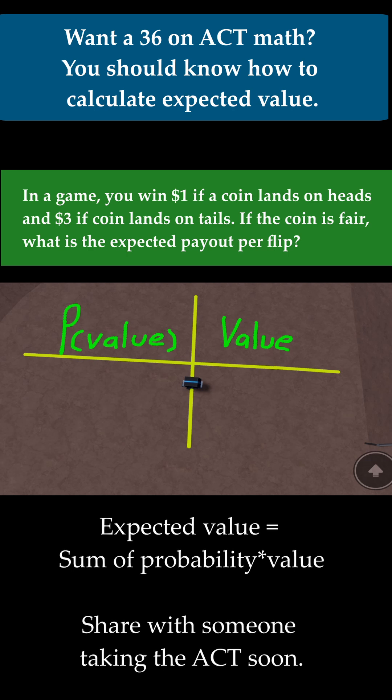Let's take a look at this first problem. It says in a game, you win $1 if a coin lands on heads and $3 if a coin lands on tails. If the coin is fair, what is the expected payout per flip?